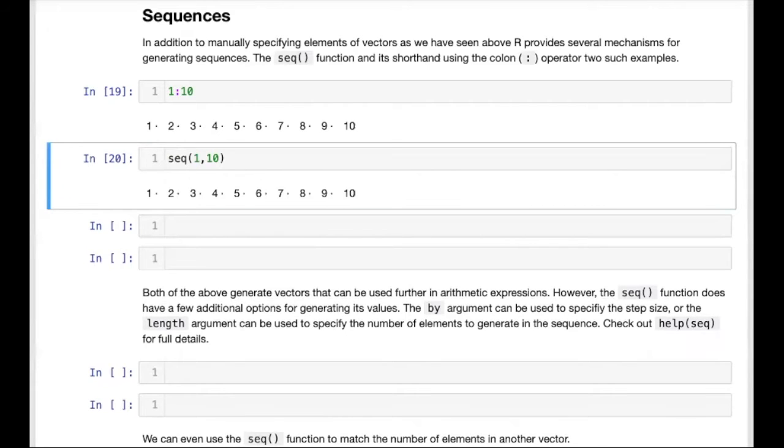The intermediate values are actually generated until they exceed the final value, in which case the sequence itself is terminated, and all values greater than the final value are not included. This will work for both integers and floating-point values.